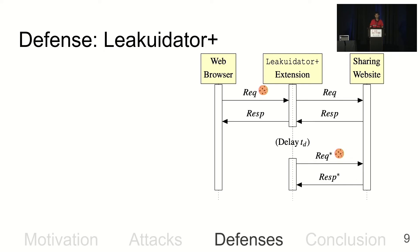The extension then compares the two responses — the first and the second. If there is a difference between the two responses, it means the response relies on cookies, making it prone to targeted de-anonymization attacks. At that point, the extension notifies the user and lets the user decide what to do.